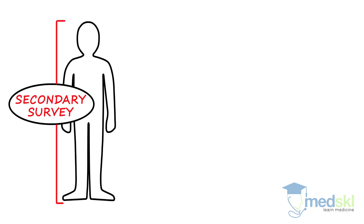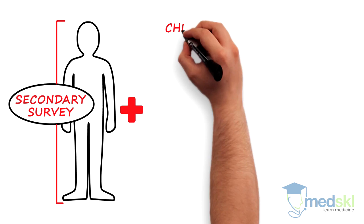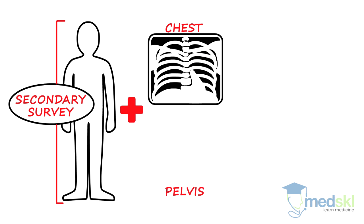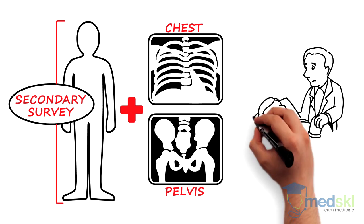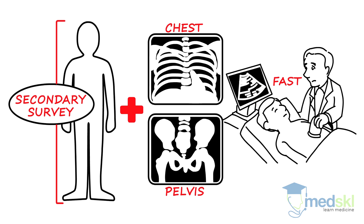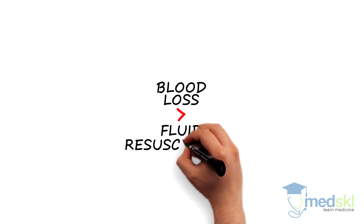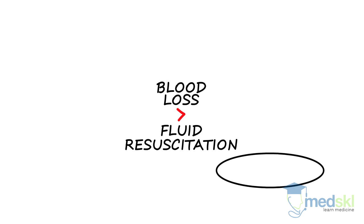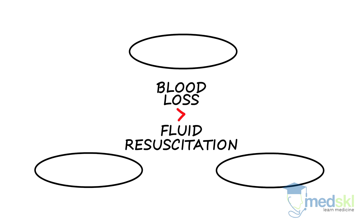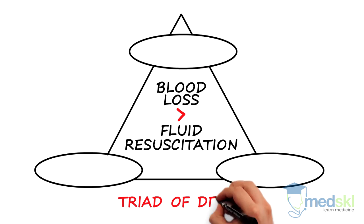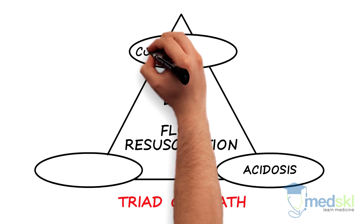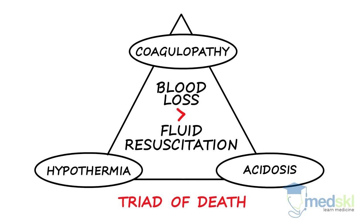Along with the secondary survey, the major trauma patient often requires a chest x-ray, pelvis x-ray, and an ultrasound of the abdomen called a FAST — a focused assessment with sonography and trauma. This will allow identification of blood loss from the most common sources. If blood loss exceeds resuscitation with fluid and blood, the patient will spiral into the classic trauma triad of death: acidosis, coagulopathy, and hypothermia.